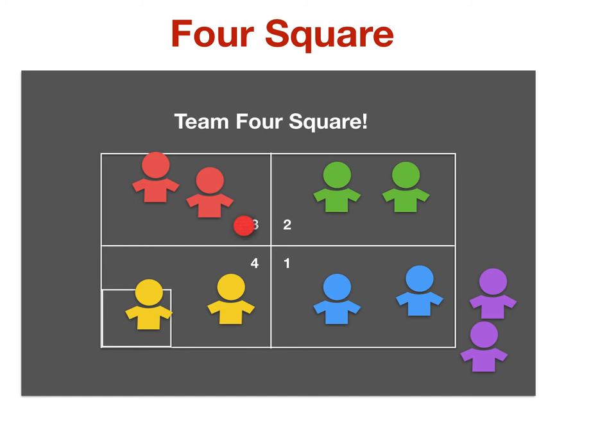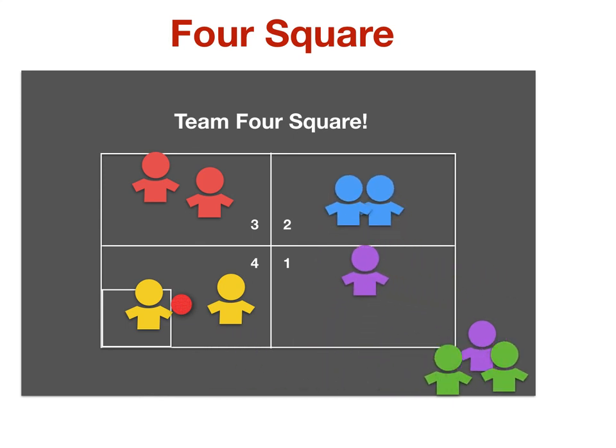The serving team hits it to the red team, who in turn hits it to the green team, but they can't return it. So the green team is out. Let's see the rotation. Blue is on court two, purple is in, and that is team four square.